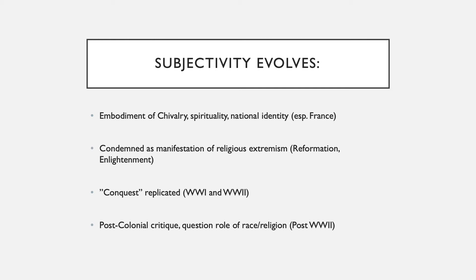Another period in the historiography connects to the religious element of the crusades. During the Reformation, Protestants look at the crusades as the ultimate manifestation of everything wrong with the Catholic Church. In the Enlightenment — very much a rejection of religion more generally — they point to the crusades as an example of how religion corrupts. For them, it's not one religious group over another; it's all religion bad, and therefore anything motivated by religion, like the crusades, is bad.